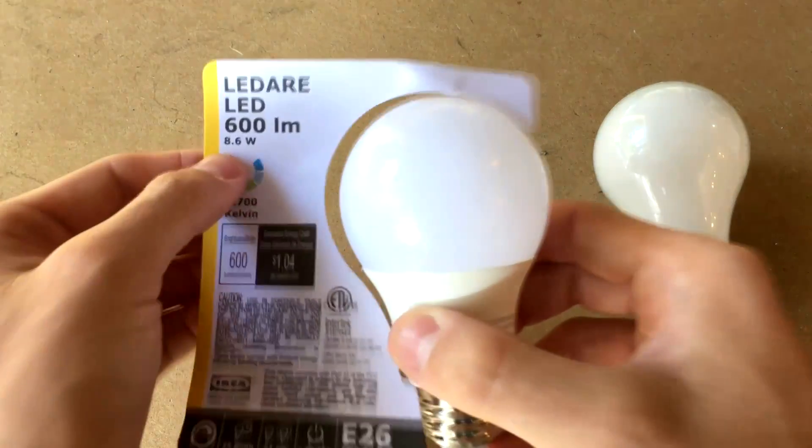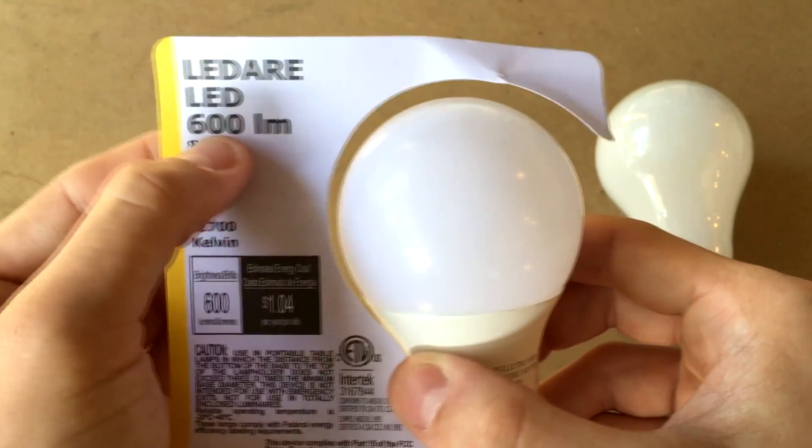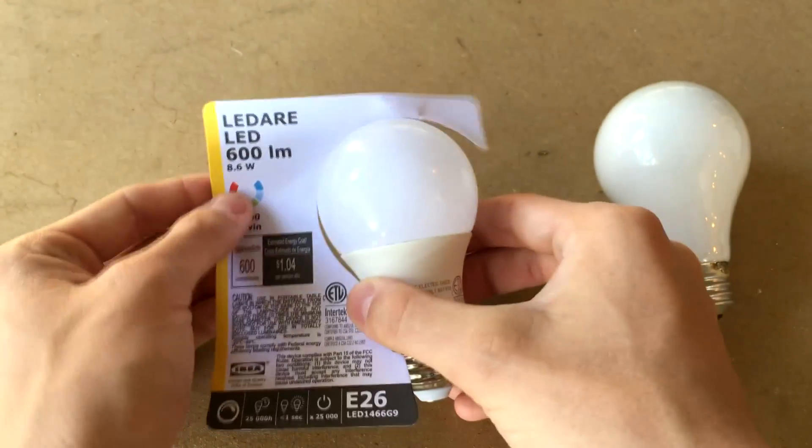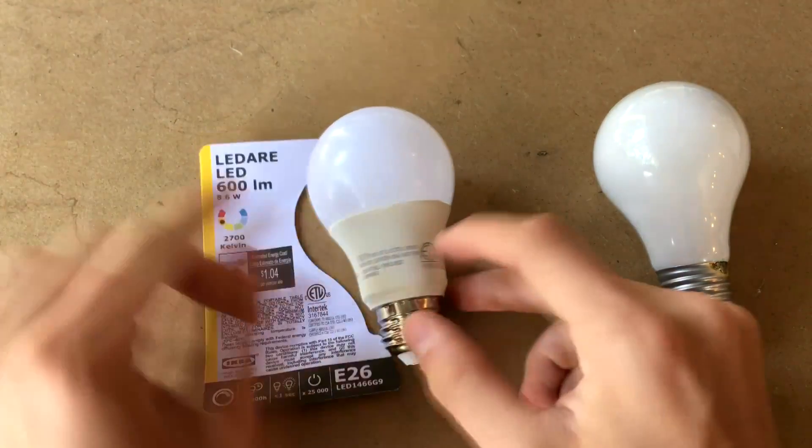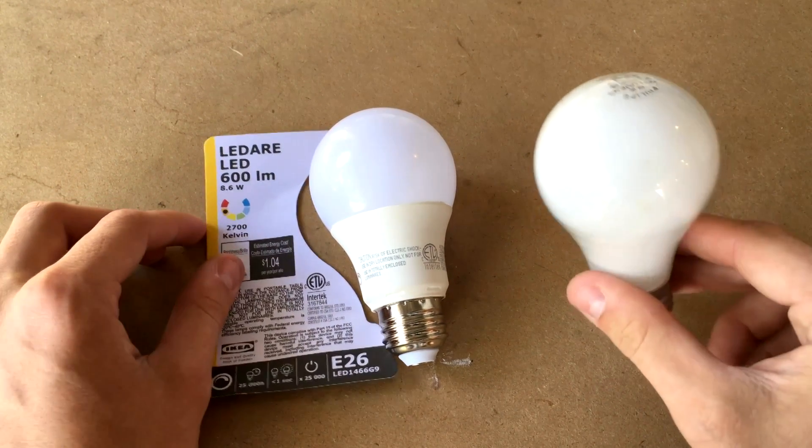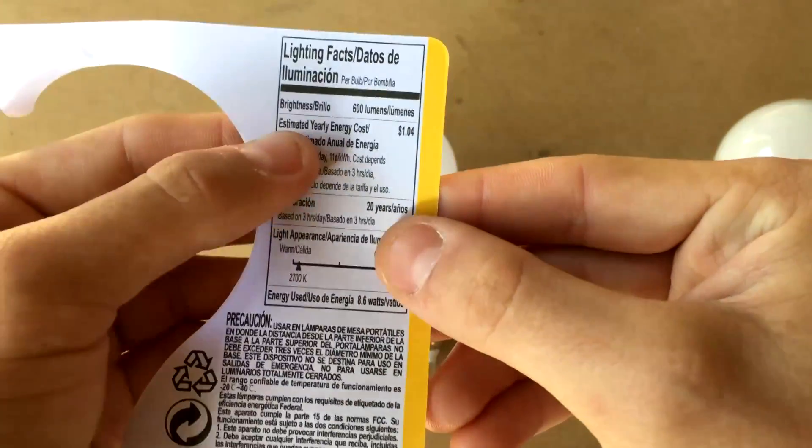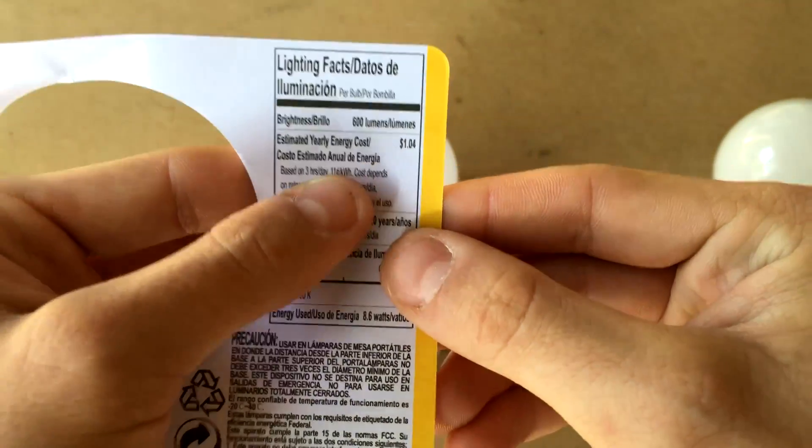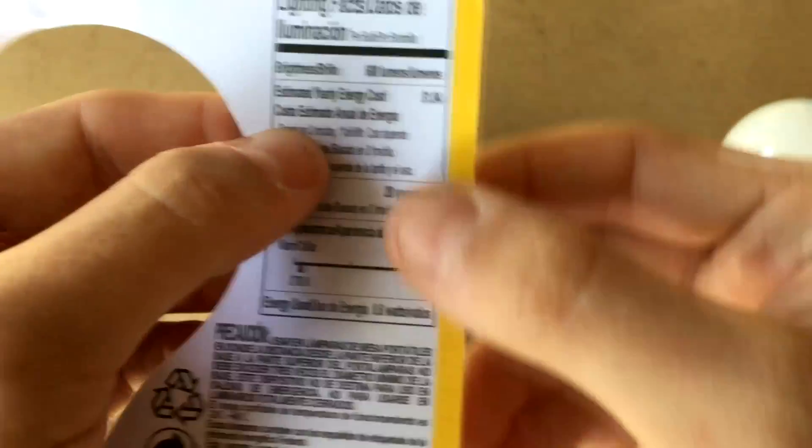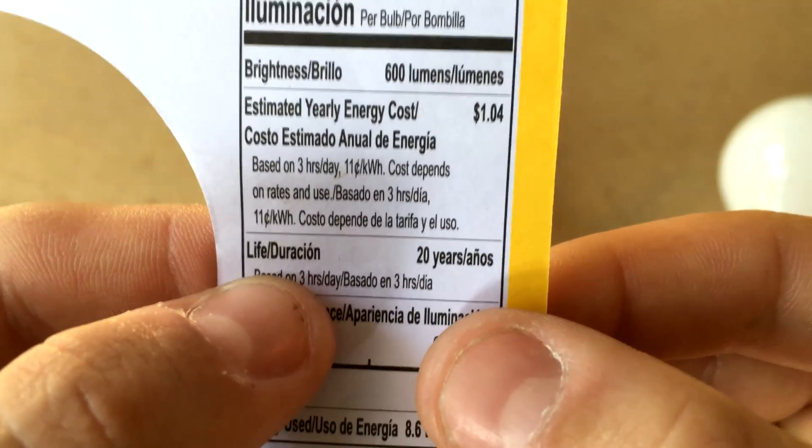This LED light bulb uses only 8.6 watts of electricity to put out 600 lumens of light. So 8.6 watts over here for 600 lumens versus 40 watts over here for 470 lumens. According to the back of the package right here, the estimated yearly energy cost of running this LED light bulb will be $1.04 a year based on 3 hours per day at 11 cents per kilowatt hour.